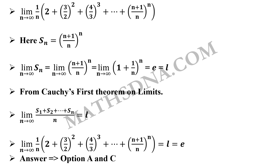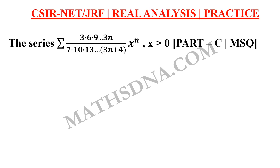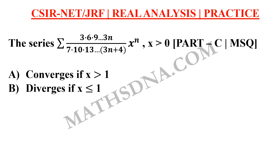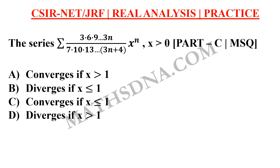So the correct answers are option A and option C. Thank you, and here is a practice question for you: the series summation of (3·6·9·...·3n) / (7·10·13·...·(3n+4)) · x^n, where x > 0 — determine whether it converges if x > 1, diverges if x ≤ 1, converges if x ≤ 1, or diverges if x > 1. Comment your answer below. This is a Part C question, so it can have more than one correct answer — be careful.